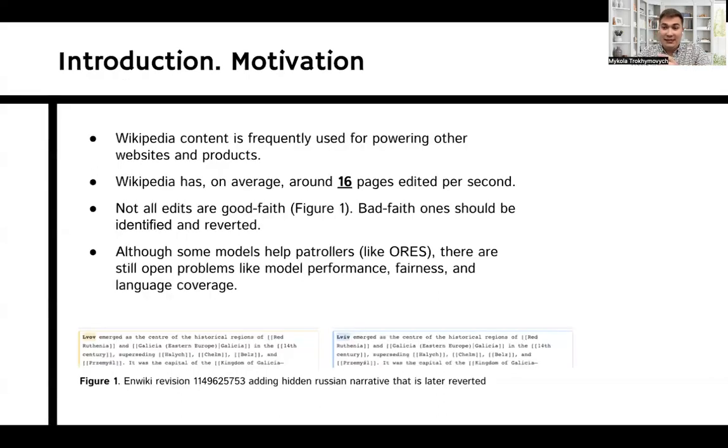Wikipedia plays a central role in today's web, and its knowledge is frequently used for empowering other websites and products. At the same time, it is a very fast-changing environment, with around 16 changes per second in more than 250 different languages.